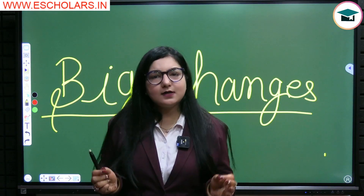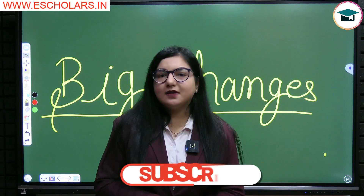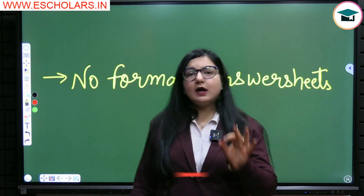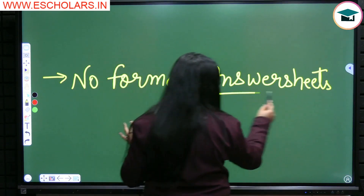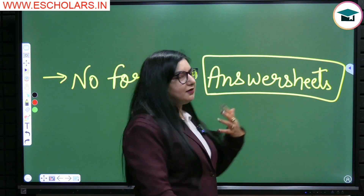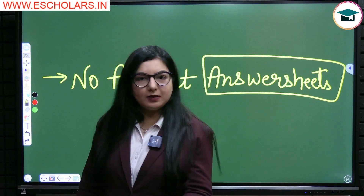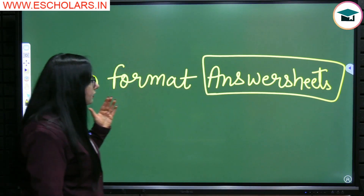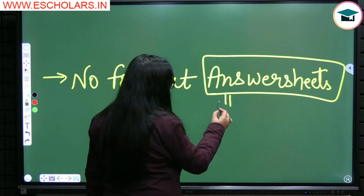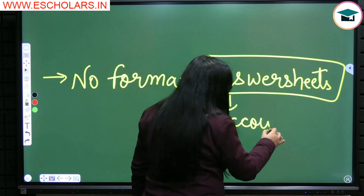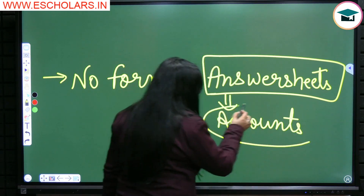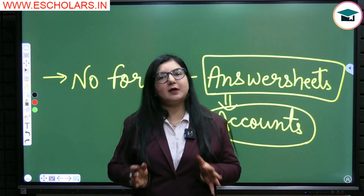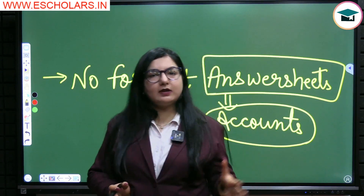Without wasting any time, let's talk about the changes CBSE has done for Board Exams. The first change is related to accounts answer sheets. From the last two years, CBSE accounts answer sheets were given with pre-printed tables — that is, formats like journal and ledger formats were provided in the answer sheet.